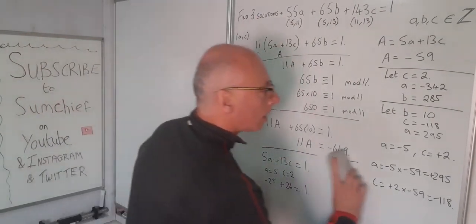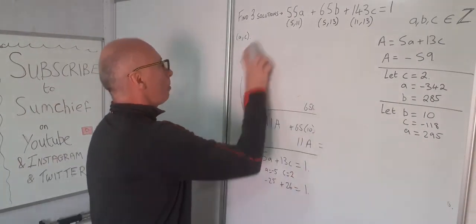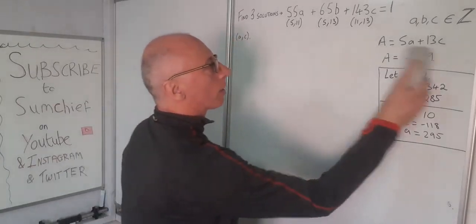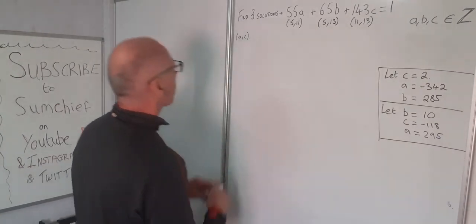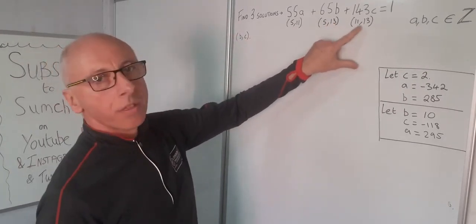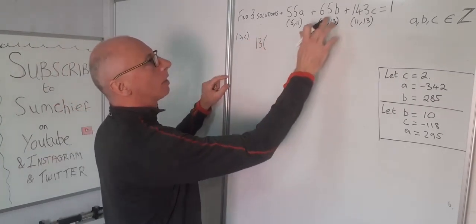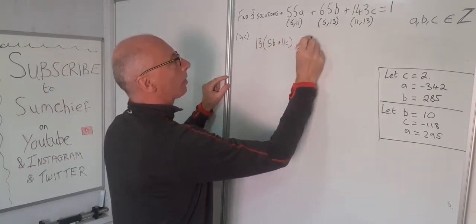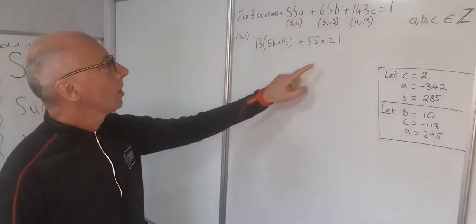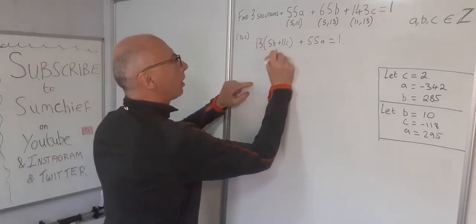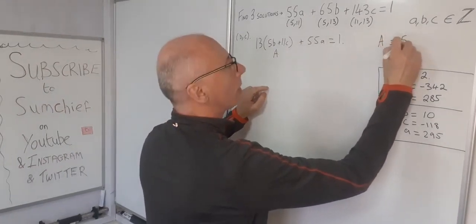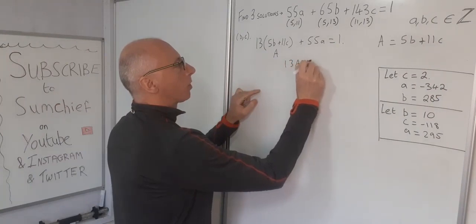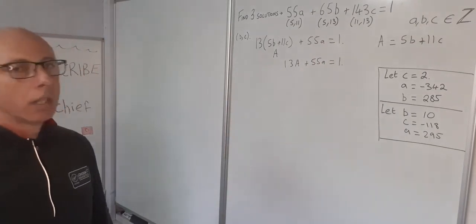Now I'm going to mix B and C together. B and C have a 13 as a common factor. So we've got 13 times (5B plus 11C) and then add the A, which is 55A, and that equals 1. So now I'm going to let this 5B plus 11C be my capital A. So capital A equals 5B plus 11C. Rewriting: 13A plus 55A equals 1.